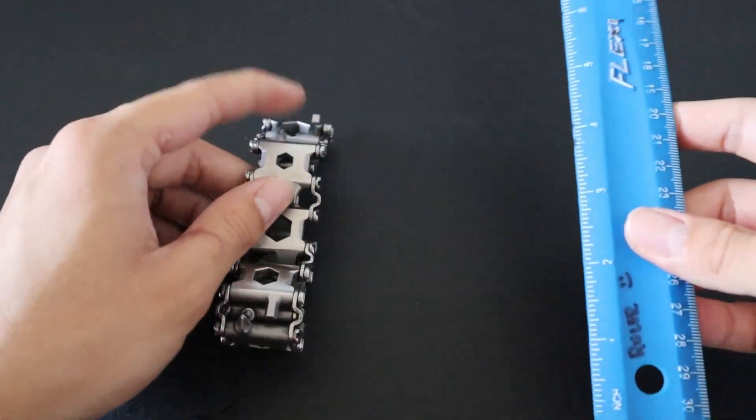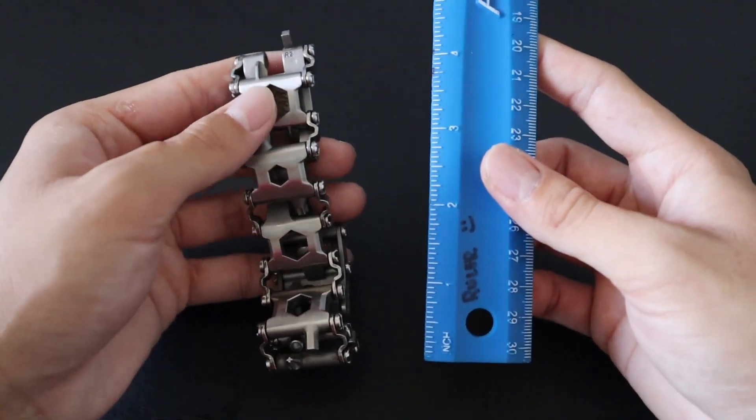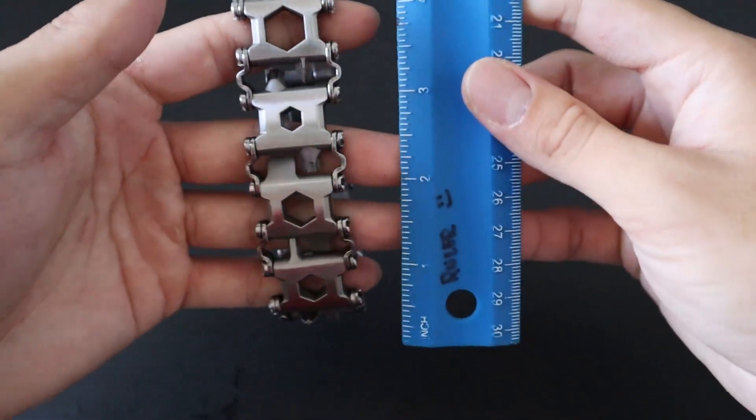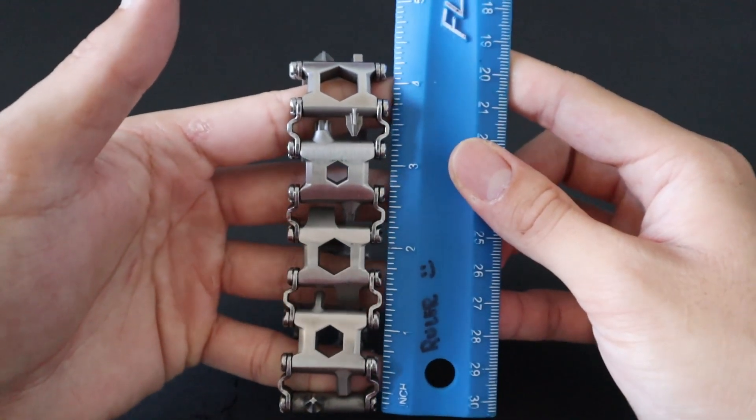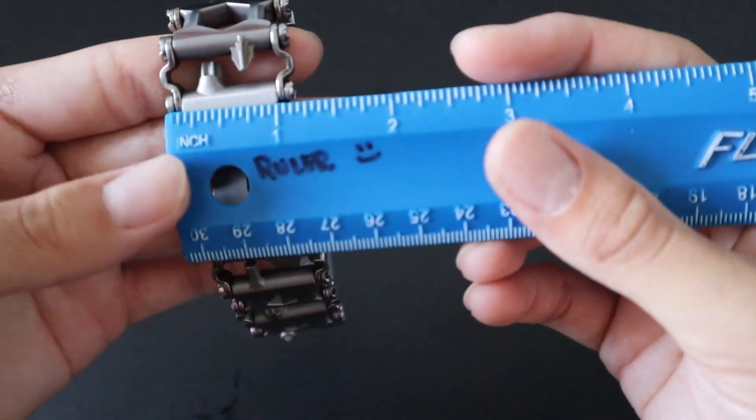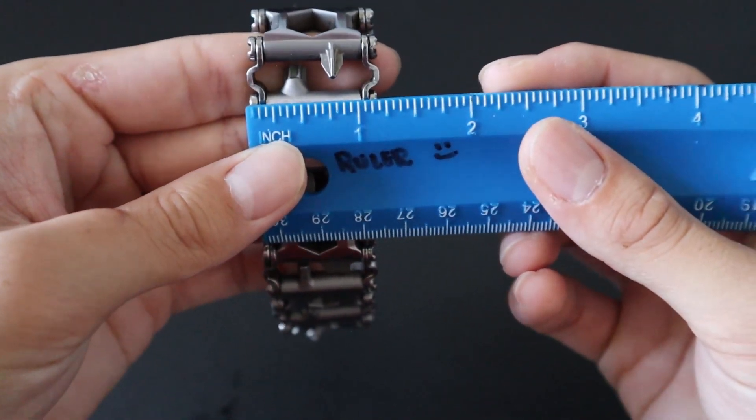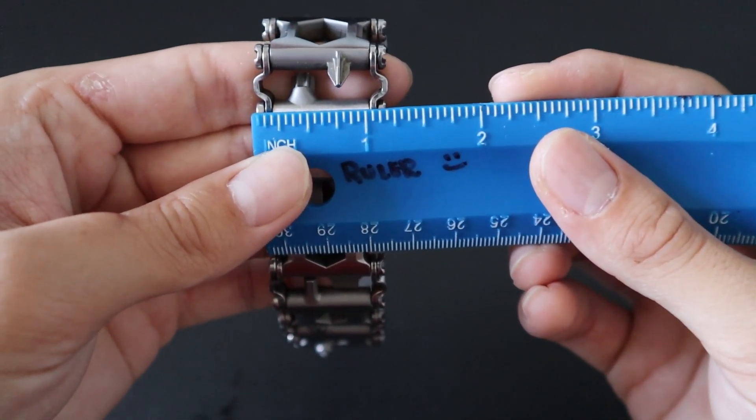And for the last size comparison, I'll throw it up against a ruler. Again, it's going to be different from your personal tread depending on how big your wrists are and the amount of links you use. It's about four, four and a half inches long. I guess the biggest thing would be to measure the width of it. As you can see, from screw to screw, it is a little bit over an inch, almost an inch and a quarter.